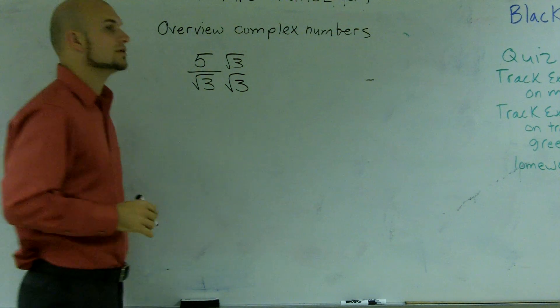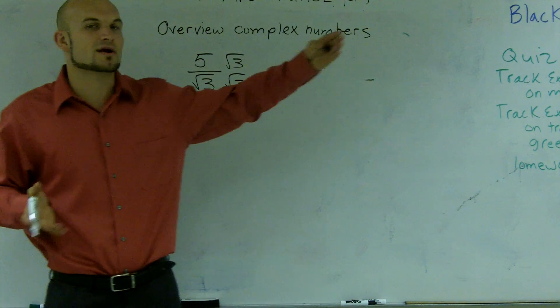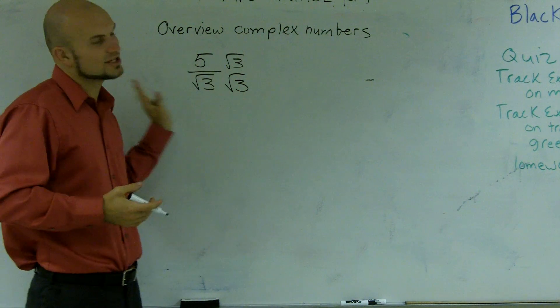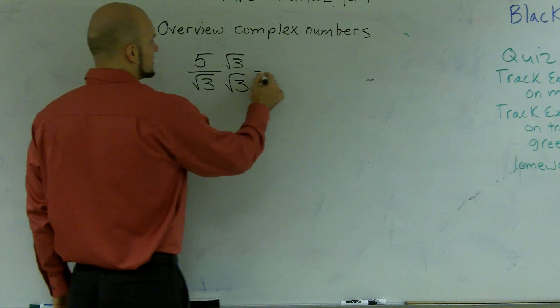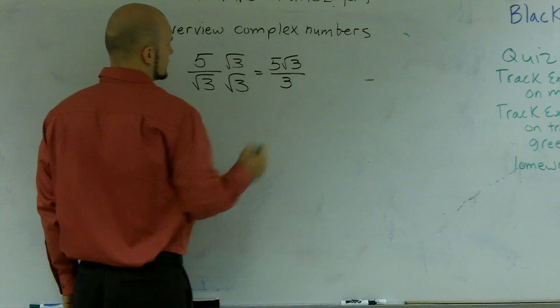Well, the reason why you can't have a radical on the bottom is we don't know the value of the square root of 3. It goes on repeating forever. So, it's not a rational number. It's irrational. It's going to go on forever. So, you can't divide that into a number 5. So, we rationalize the denominator to get 5 radical 3 divided by 3.